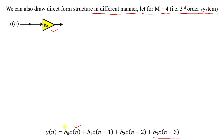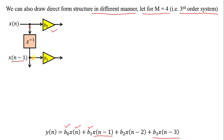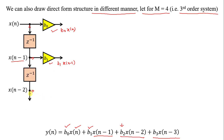In the vertical format: X(N) with multiplying factor B0 gives B0·X(N). Then a delay gives X(N−1) with multiplying factor B1, yielding B1·X(N−1). Similarly, another delay gives X(N−2) with multiplying factor B2, yielding B2·X(N−2).